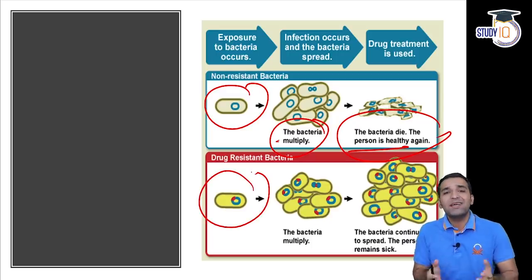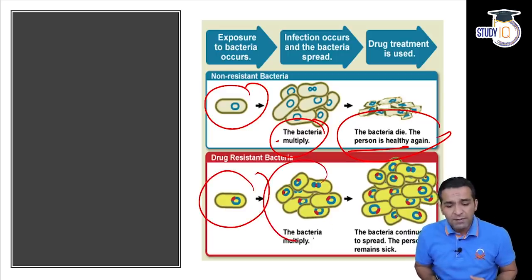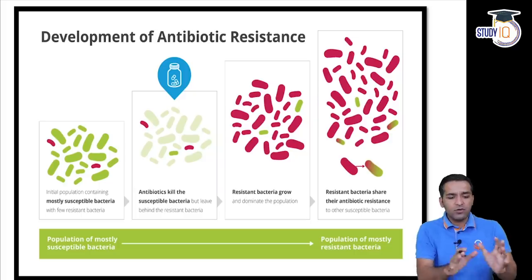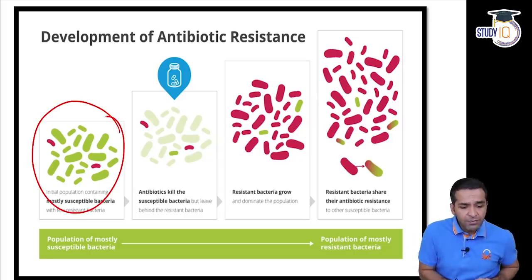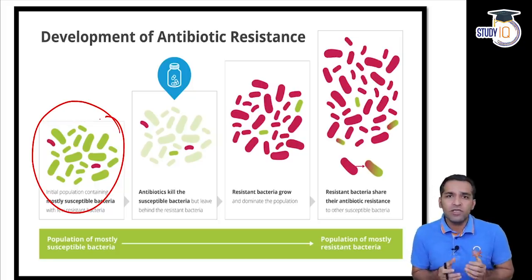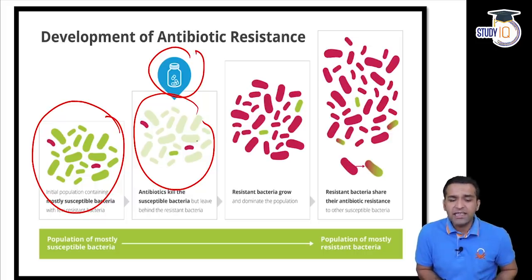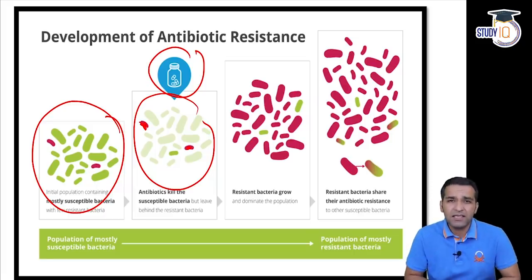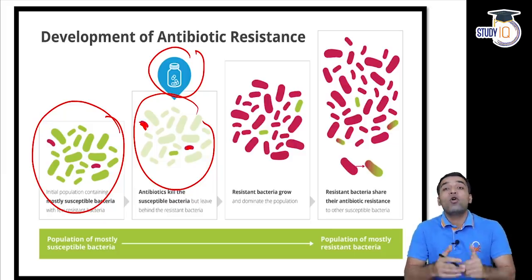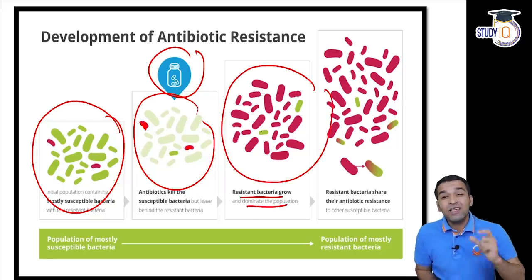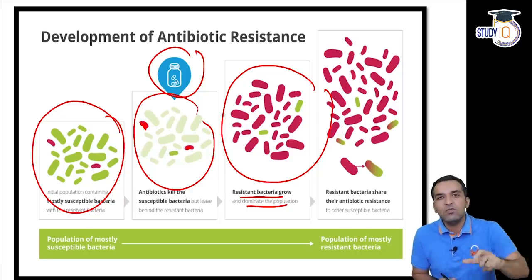Agar drug-resistant bacteria ho - jis bacteria ke upar kisi drug ka asar hona hi nahi raha - woh multiply hota rahega aur drugs uske upar asar nahi karenge, and the person will remain sick. Agar hum poore process ko dekhein, toh is prakaar se hota hai: jab initially ek population jo bacteria ki hoti hai body ke andar ghusati hai, aur wahan bhi maar kar deti hai - antibiotic jab hum use dete hain - toh saare ke saare bacteria ko khatam karta hai, except few. Ye few wapas phir se multiply karte rehte hain. Body se kabhi bahar ho jaate hain, lekin bacteria anti-bacterial resistance ke roop mein aur zyada strong ban kar ubharta hai. Aur dheere dheere iska resistance grow hota hai, and these resistant bacteria dominate the population of the bacteria.